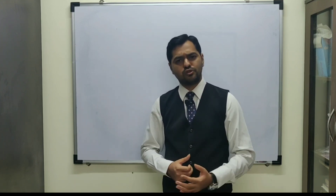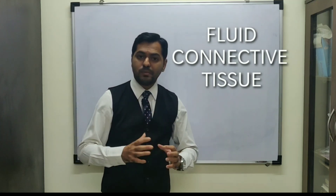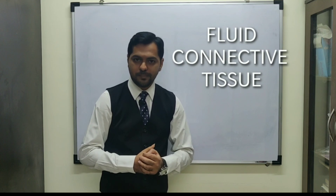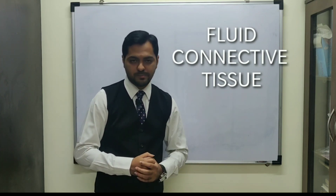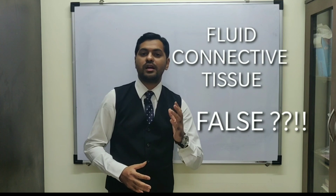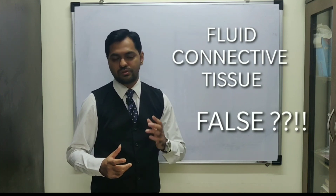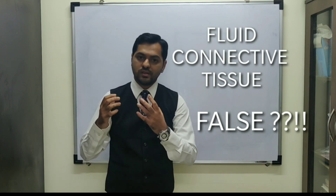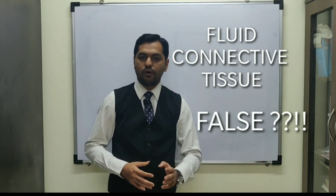Blood is basically a fluid connective tissue. As a tissue, it has a collection of cells and a matrix — the medium. Blood consists of a group of cells and a matrix called plasma. Blood is considered a false connective tissue because it does not contain elastin or collagen fibers, and its cells do not produce the matrix, unlike true connective tissue.